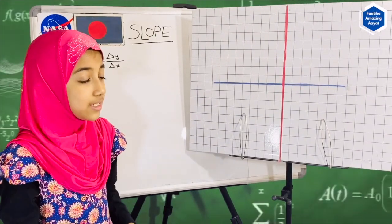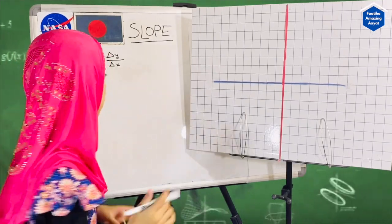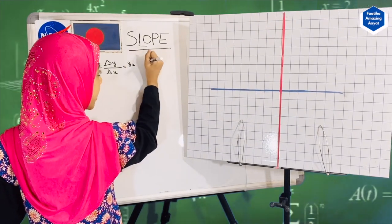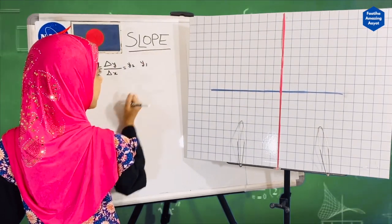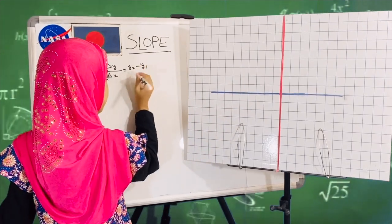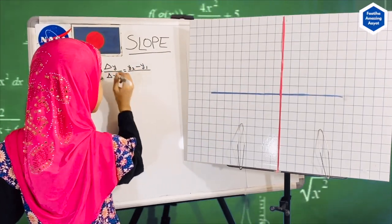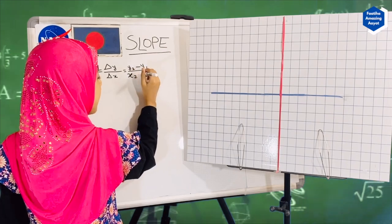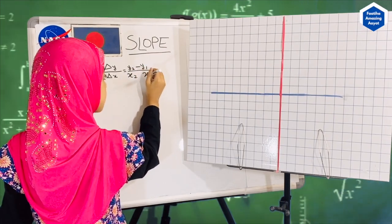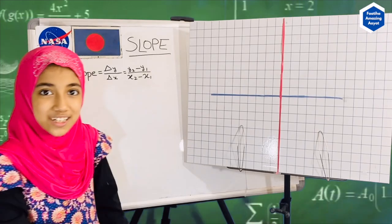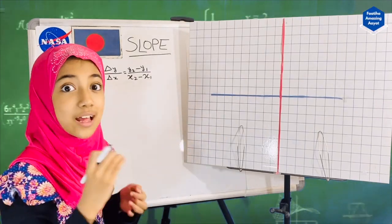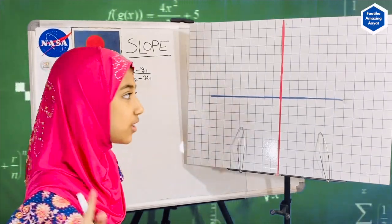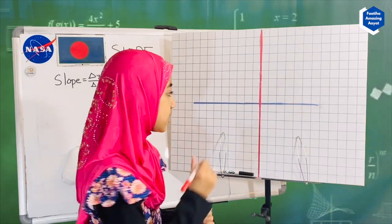It's the change in y over the change in x. If our current position is y2 and our previous position was y1, then to find the change we subtract them. Similarly for x — if the present position is x2 and the previous one is x1, subtract them and you get the change. This is exactly how you find a slope.